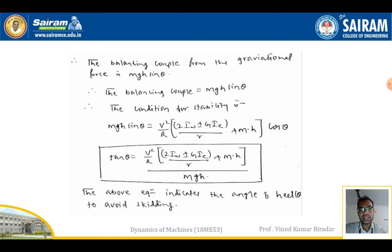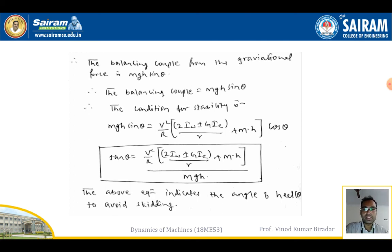The balancing couple from the gravitational force is: C_balancing = m·g·h·sinθ. For the stability condition, the balancing couple equals the overturning couple: m·g·h·sinθ = (v²/R)·[(2·Iw ± G·Ie)/r + m·h]·cosθ. Dividing sinθ by cosθ gives tanθ, so: tanθ = v²/[R·m·g·h]·[(2·Iw ± G·Ie)/r + m·h]. This is the equation for the angle of heel theta to avoid skidding.